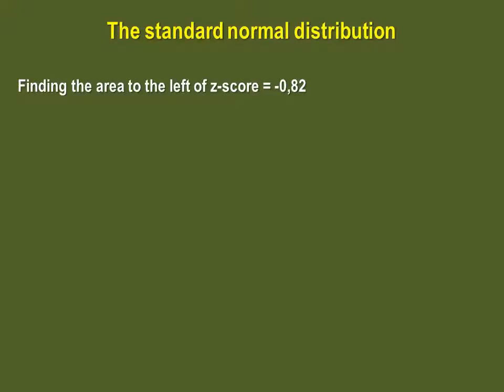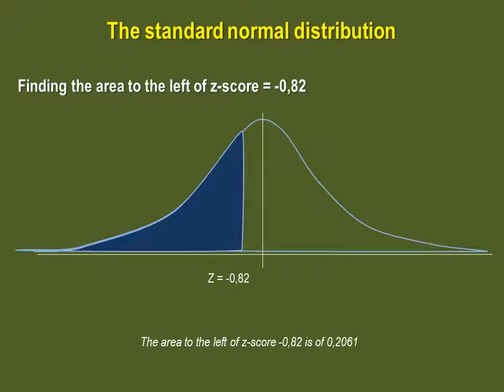Now it's your turn. Pause the video and find the area to the left of Z-score minus 0.82. That's correct. The area to the left of Z-score minus 0.82 is 0.2061.